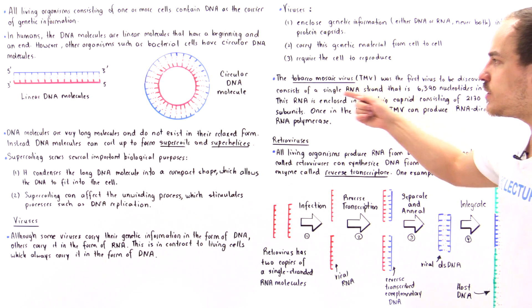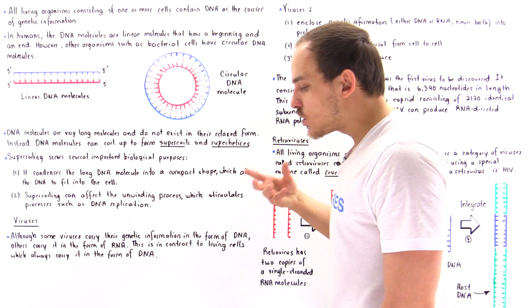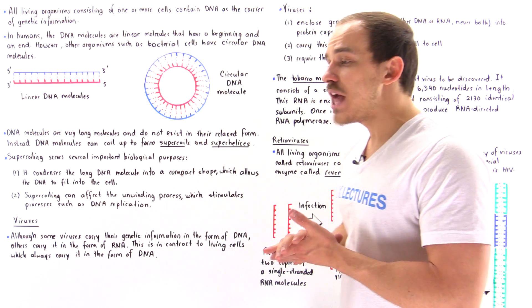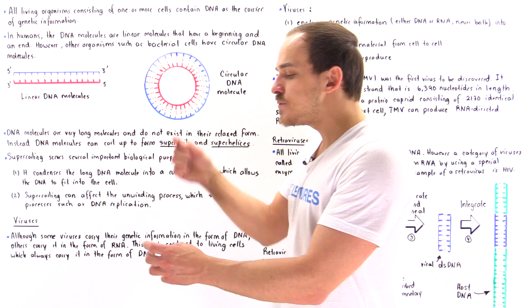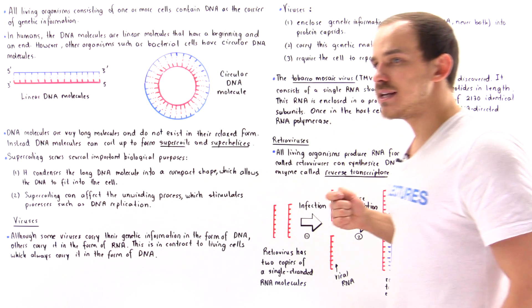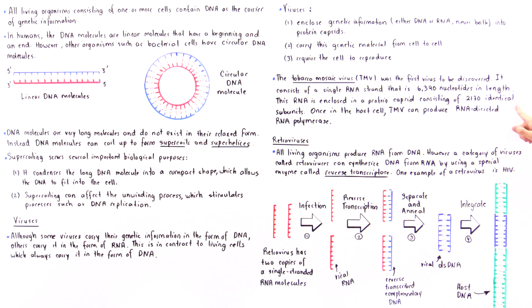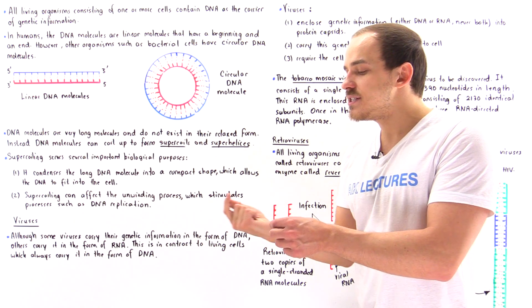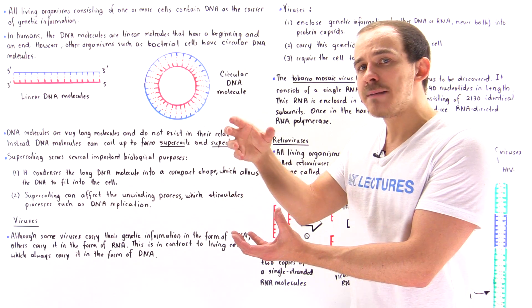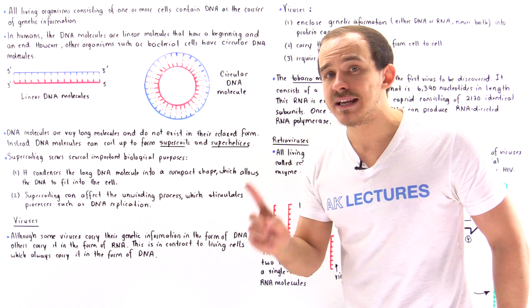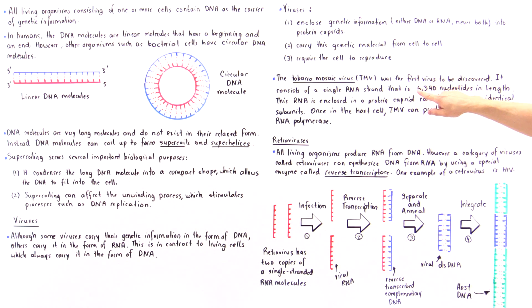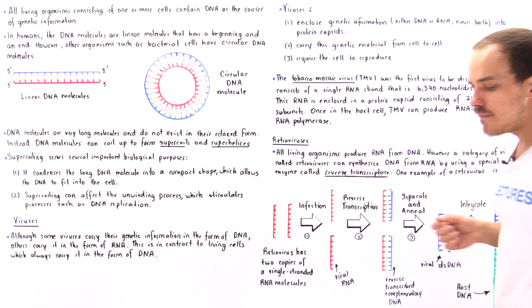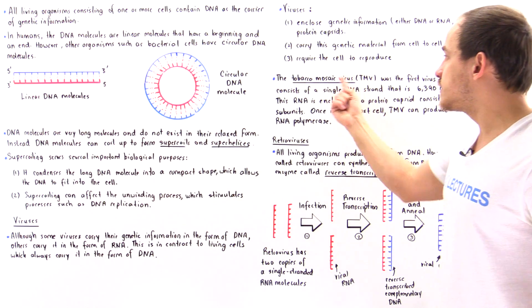The tobacco mosaic virus is actually the first virus ever discovered. This virus consists of a helical protein capsid made up of 2,130 identical polypeptide subunits. These subunits form the helical protein capsid, and inside that capsid we have a single-stranded RNA molecule that is 6,390 nucleotides in length.